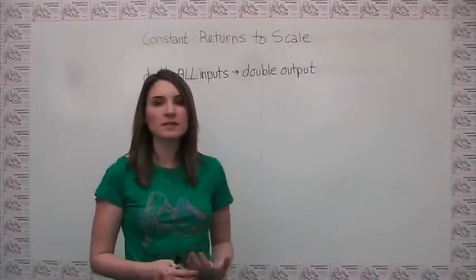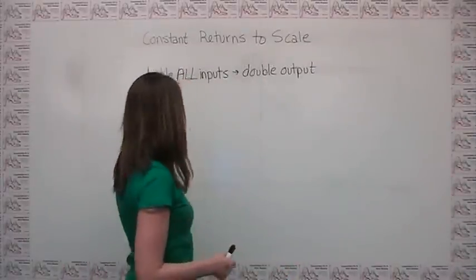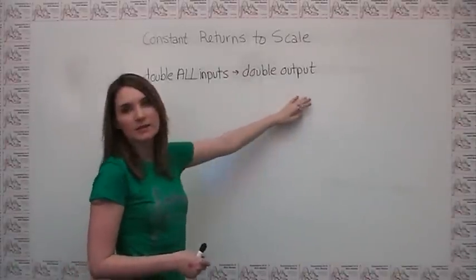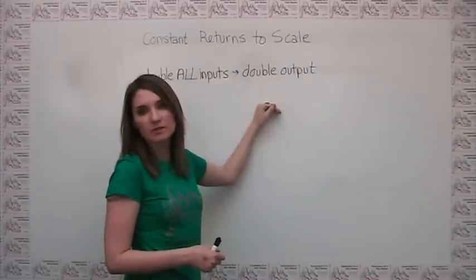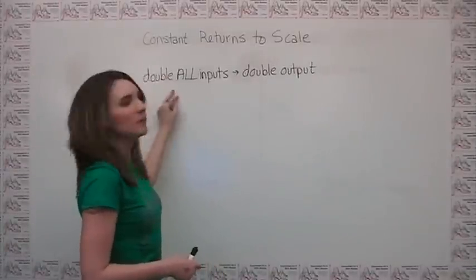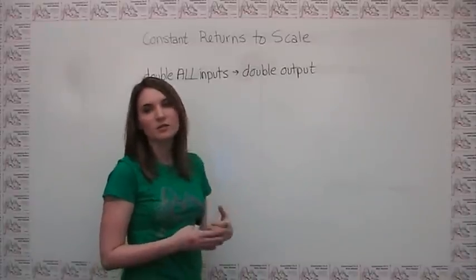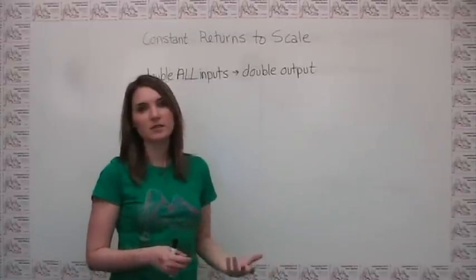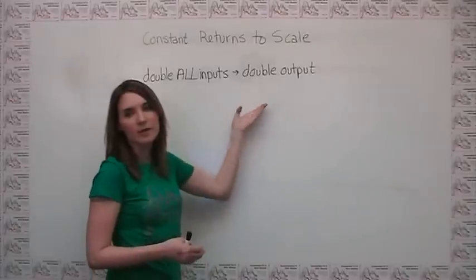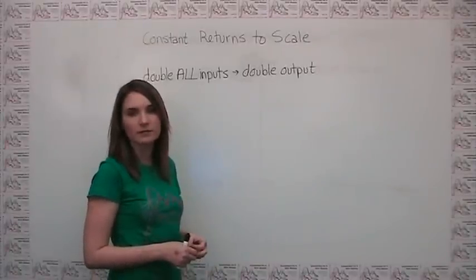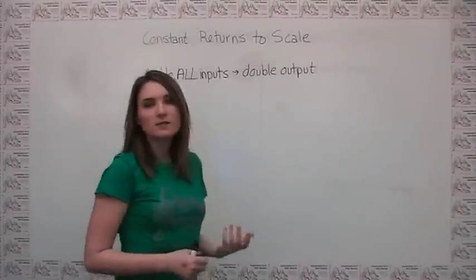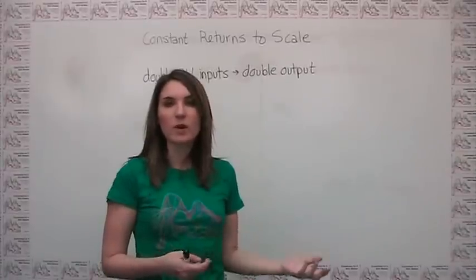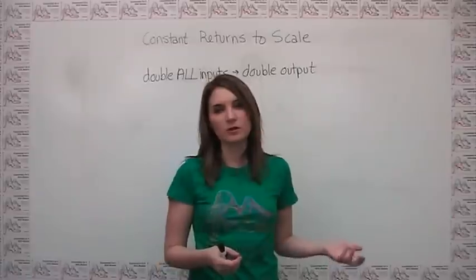Put another way, if a firm exhibits constant returns to scale, then if we put twice as much of all of the inputs into the production process, then we get exactly twice as much output out of the production process. Again, you want to remember here that we're considering what happens when you double all of the inputs, and not just one. So for example, we have to double labor, materials, capital, anything else that we're using in this process in order to be able to figure out what's happening in terms of returns to scale. In the case of constant returns to scale, you can think of this as it doesn't matter in terms of cost effectiveness whether you're bigger or smaller because your average cost stays the same regardless of what your quantity of output is.